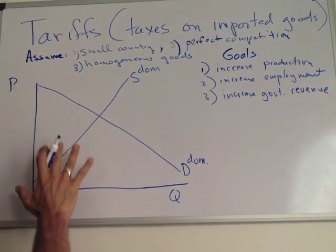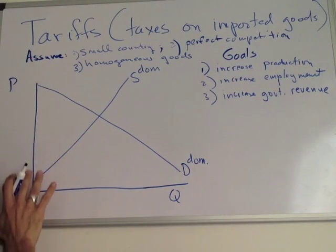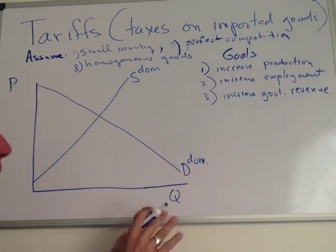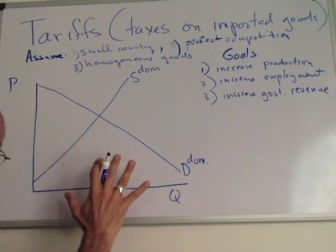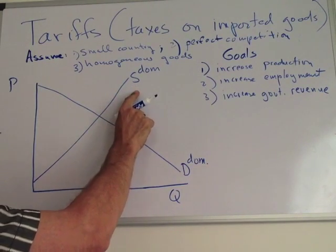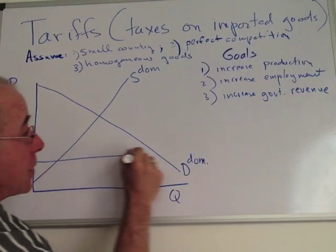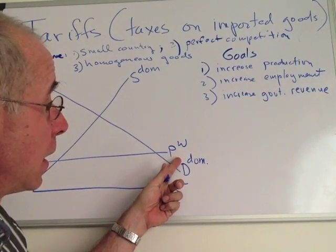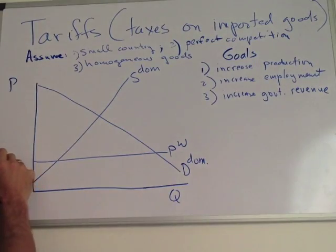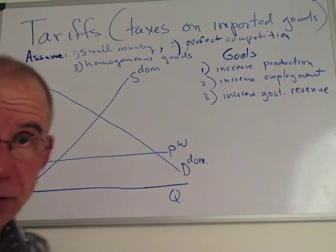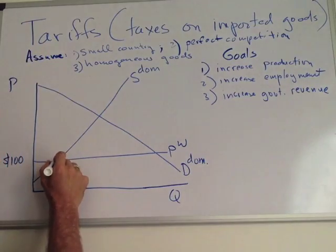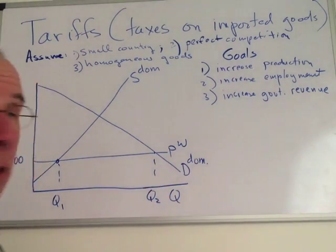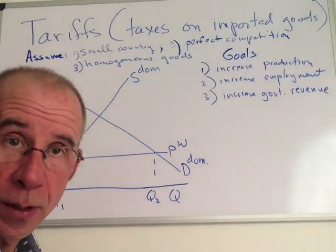We have a simple supply and demand curve, with the domestic price of the good on the vertical axis and quantity inside the domestic economy on the horizontal axis. This is the impact inside the domestic economy. We've got a domestic supply curve and a domestic demand curve. Let's imagine that we start out with free trade, and the domestic economy has access to a price of $100 for goods from foreign sources. Initially, we've got Q1 produced domestically and Q2 consumed domestically, and the difference is the imported goods.